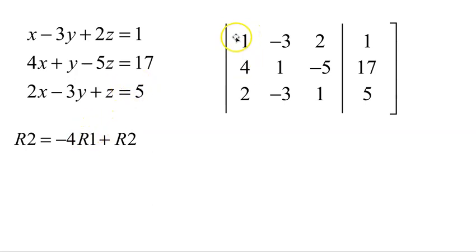Row 2 will be negative 4 times row 1 plus row 2. Negative 4 times row 1 is negative 4, positive 12, negative 8, negative 4. Add that to row 2: 4, 1, negative 5, 17, and we get 0, 13, negative 13, 13. 13 is unpleasant, but when we divide that out, those numbers become very nice. That is our new row 2.